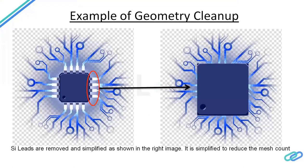One example of geometry cleanup: on this page we see an electronic chip with silicon leads. In CFD, those silicon leads are very thin and small, and meshing them requires a large number of elements. To overcome this, we neglect the silicon leads and apply the total heat content of that area to the complete chip itself. This is the type of assumption we apply in CFD software.